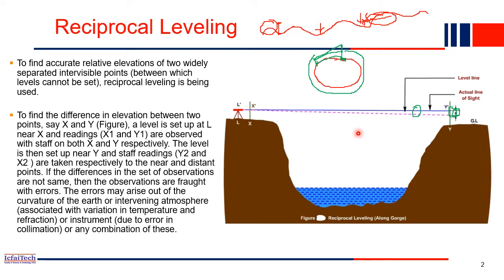So there are basically two types of errors encountered when readings are taken over large distances: one error introduced because of the curvature of the earth, and a second error introduced because of the refraction of light. Before doing the measurement, we must consider both types of errors. To find the accurate relative elevation of two widely separated but inter-visible points X and Y, reciprocal leveling is employed.